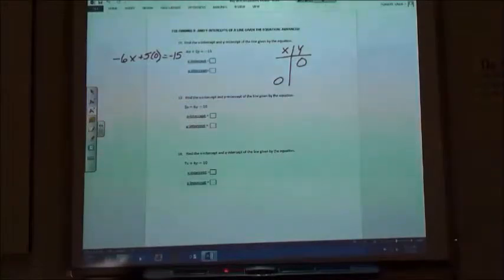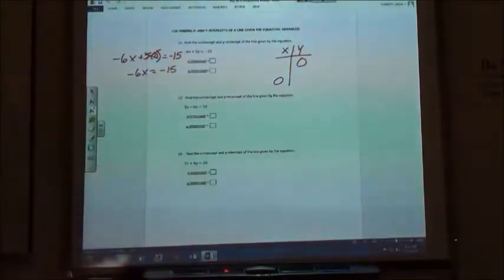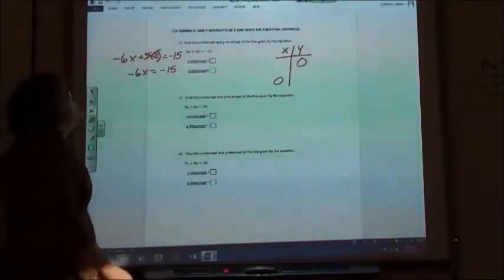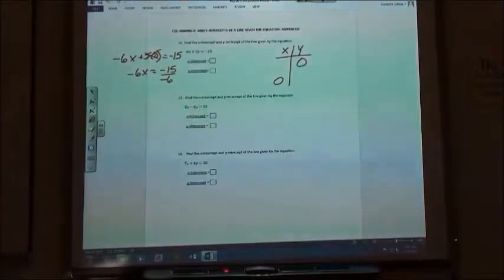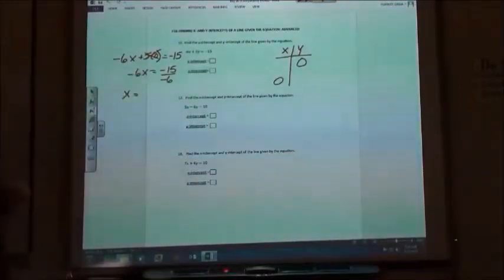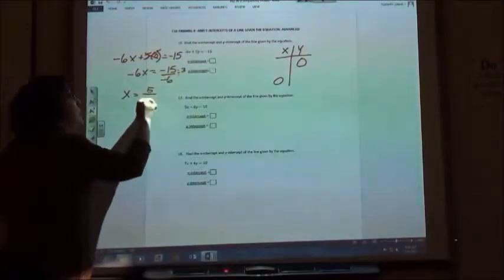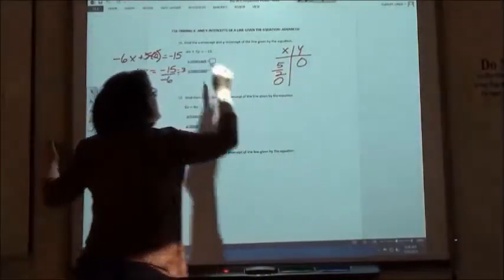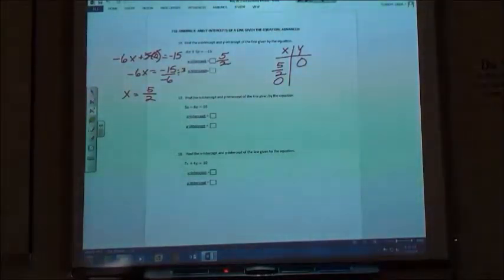Now what happens when you do 5 times 0? Zero. That just gets rid of that, right? So I get negative 6x equals negative 15. In order to solve that for x, I'm going to divide by that negative 6, right? Because I'm saying negative 6 times x. So I divide by negative 6 and simplify my fraction. If I have a negative over a negative, it's going to be positive, and 15 and 6 are both divisible by 3. So 15 divided by 3 is 5, 6 divided by 3 is 2, so 5 halves. They're not going to make you put it in as the point, they're just going to have you put in the x value, which is the 5 halves we got.